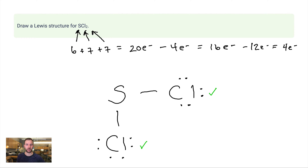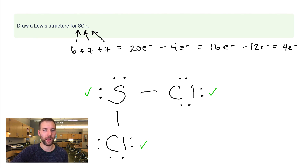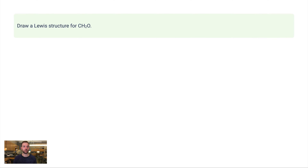Sulfur now has four electrons to begin with plus these final four dots — sulfur is happy too. One important exception: hydrogen only wants two electrons, not eight. So you will never see a hydrogen atom in a Lewis structure with a lone pair on it.